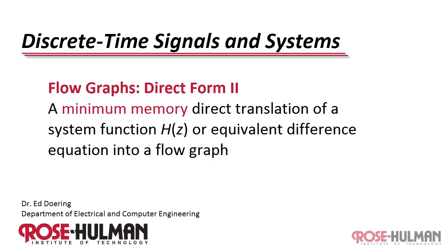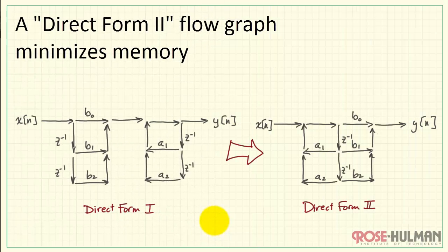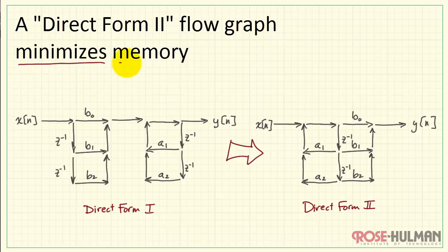Let's learn about the Direct Form 2 flow graph implementation of a system function. A Direct Form 2 version of a flow graph is of interest because it minimizes the memory. That is, it has a minimum number of delay elements.